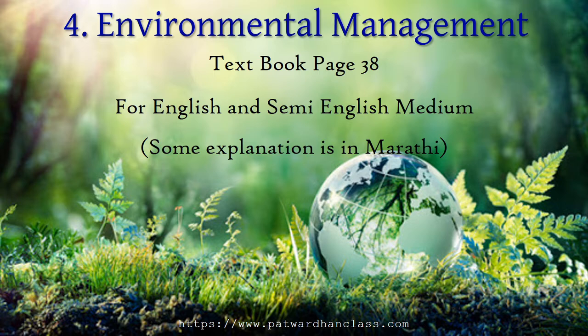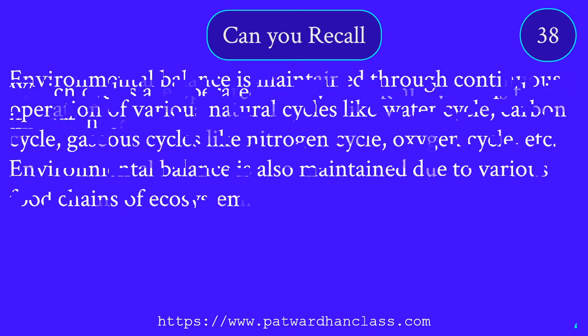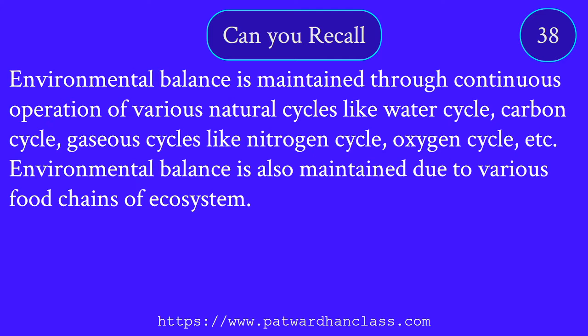Chapter 4: Environmental Management. Open your textbook to page number 38. Can you recall which cycles are operated in the environment and what is their importance? Cycles like the water cycle, carbon cycle, and oxygen cycle help maintain environmental balance through the continuous operation of various natural cycles, including the nitrogen cycle and other gaseous cycles.